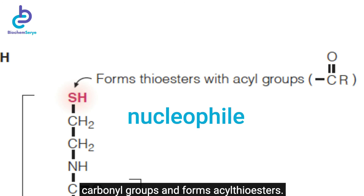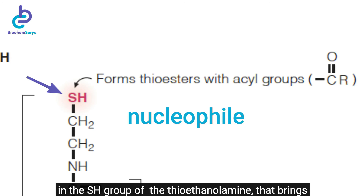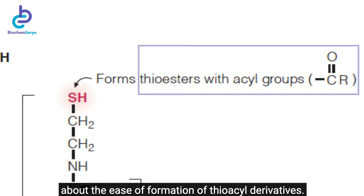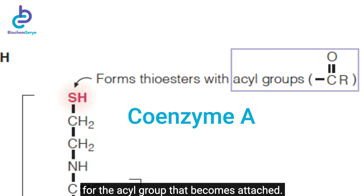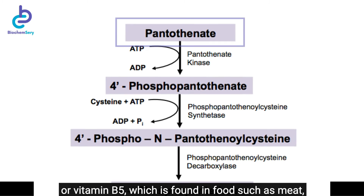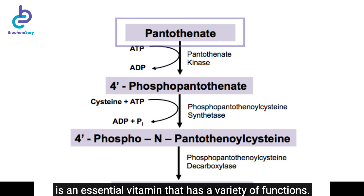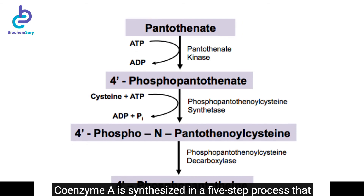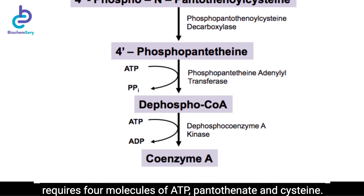It is a nucleophile that always attacks carbonyl groups and forms acylthioesters. It is the nucleophilic character of sulfur, found in the SH group of the thioethanolamine, that brings about the ease of formation of thioacyl derivatives. The iron in coenzyme A stands for the acyl group that becomes attached. Coenzyme A is naturally synthesized from pantothenate or vitamin B5, found in foods such as meat, vegetables, cereal grains, legumes, eggs, and milk. Coenzyme A is synthesized in a five-step process that requires four molecules of ATP, pantothenate, and cysteine.